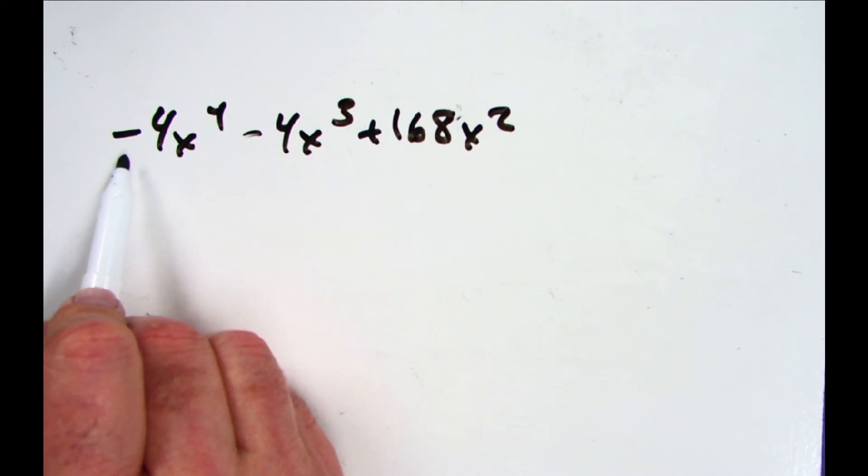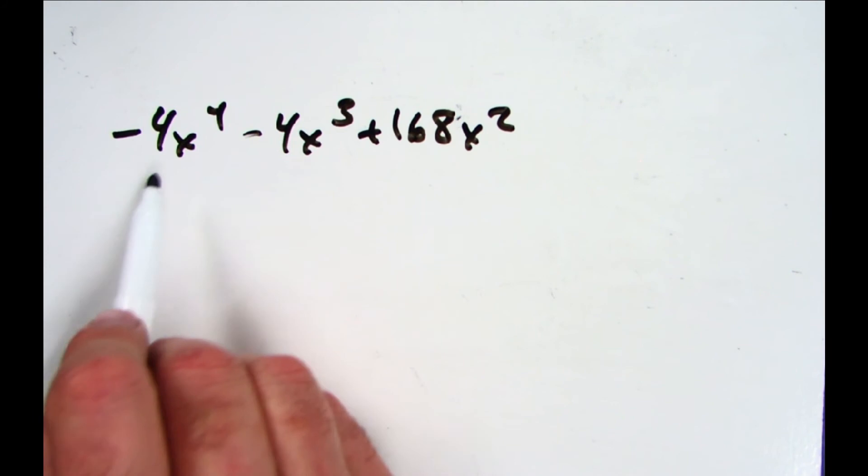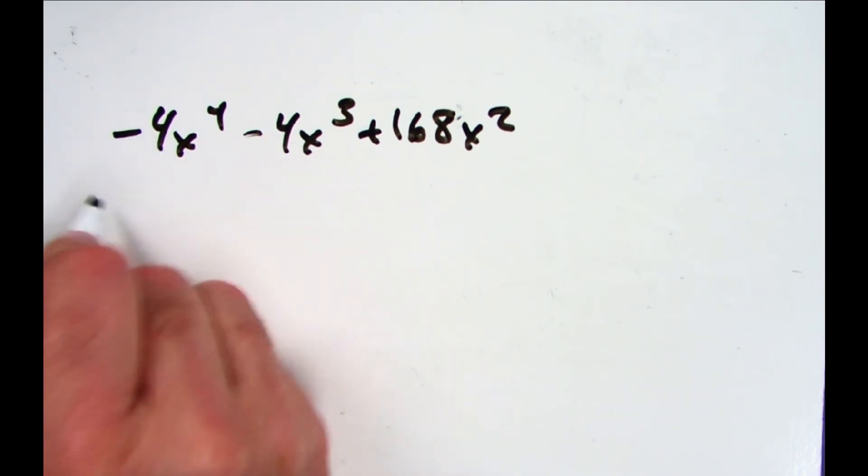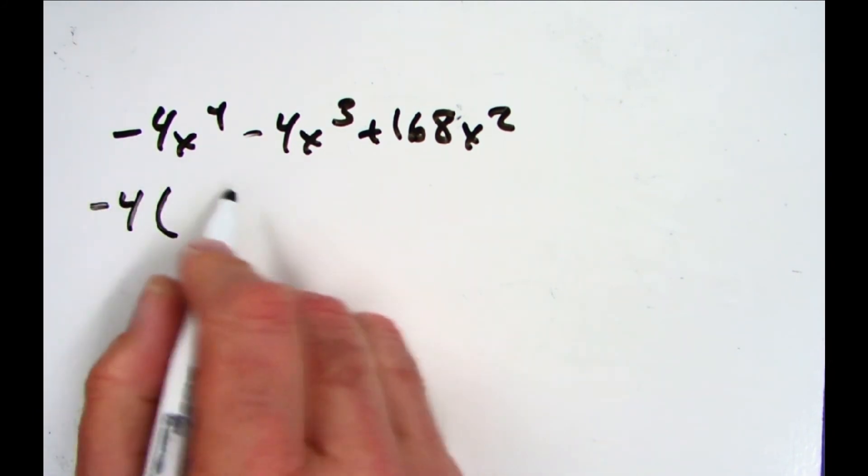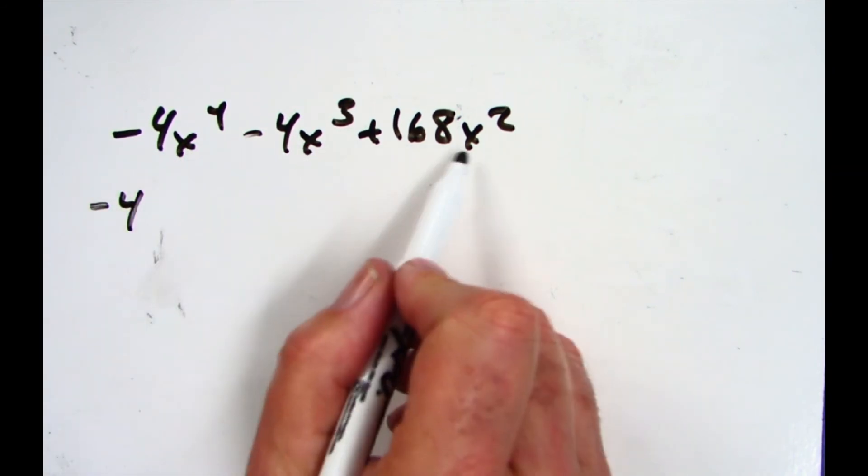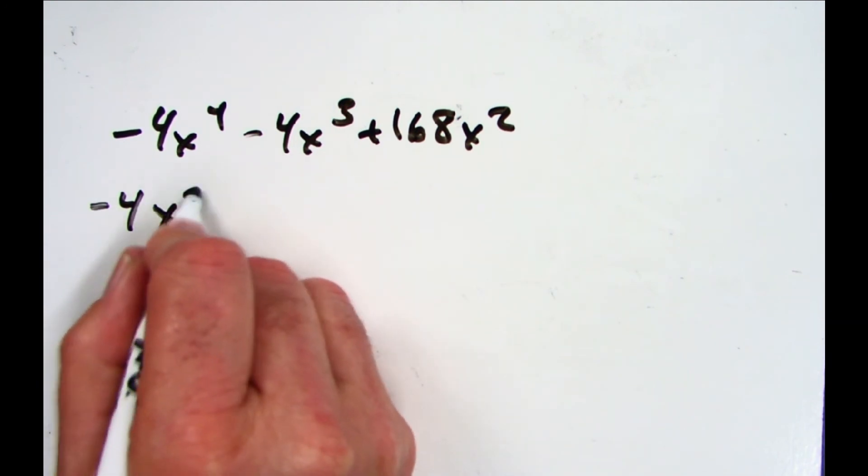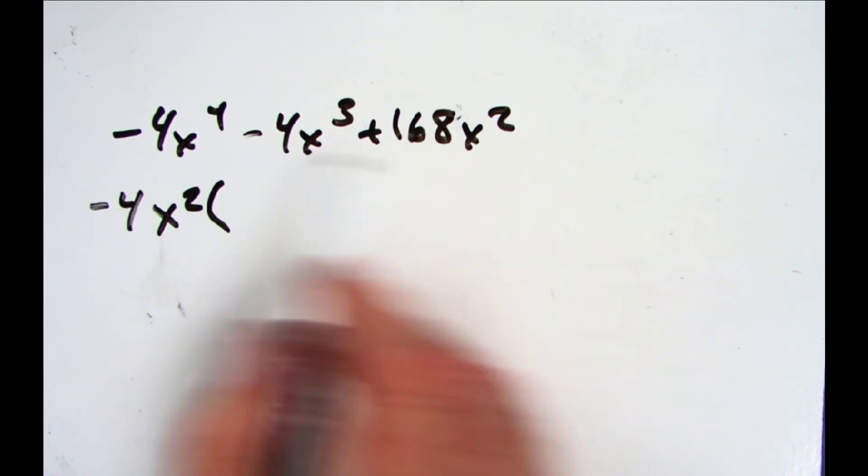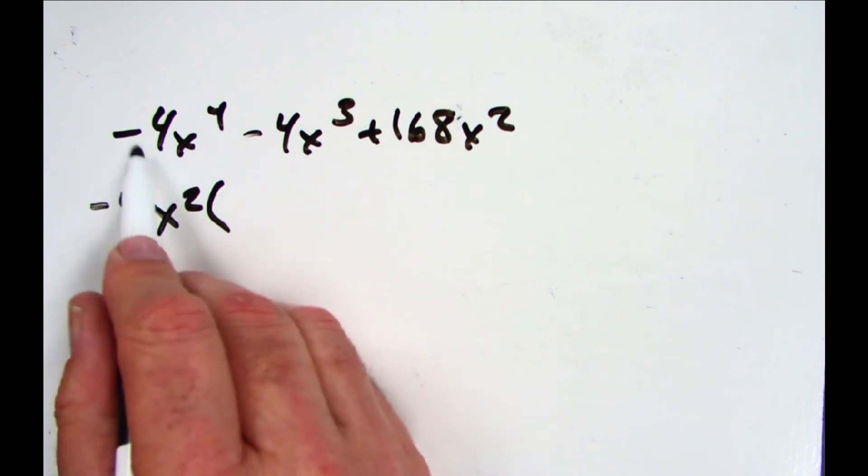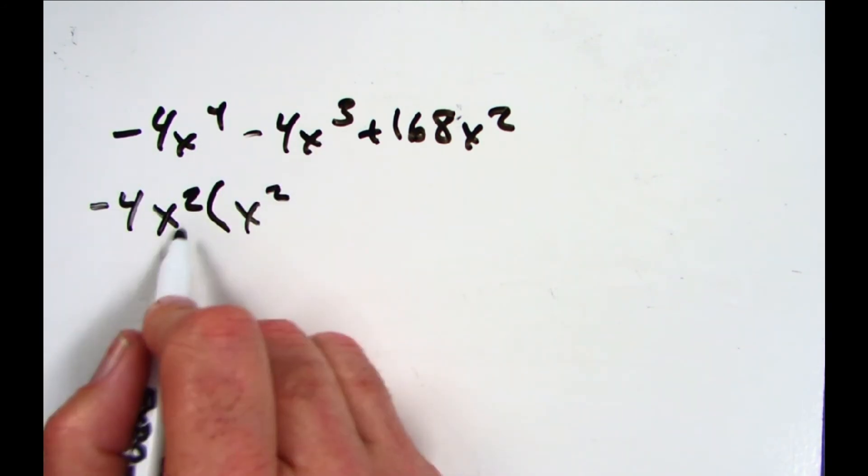But we would like the first one, when we have to do any further factoring, to be positive. So what I'm going to do is take out this negative 4. Oh, there's more though - x is everywhere, and the smallest one is x². So that's your greatest common factor right there. Now here we go: -4x² times positive x², and then -4x times x is -x, and then -4x² times -42 is +168x².